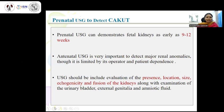Antenatal ultrasound is very helpful in the detection of renal anomalies. Fetal kidneys can be demonstrated as early as 9 to 12 weeks of gestational age, though results are dependent on operator skill and patient factors. Antenatal ultrasound helps determine the presence of kidneys, their location — whether normal or ectopic — their size relative to gestational age, echogenicity, and whether fusion anomalies are present. Supplemental information about the urinary bladder and external genitalia is also obtained.